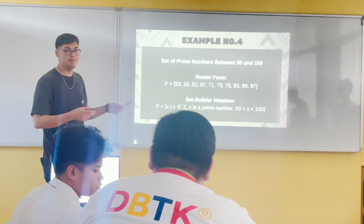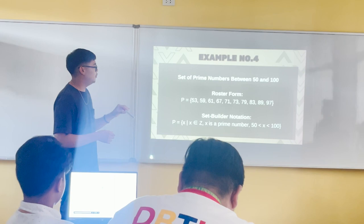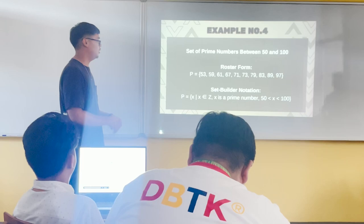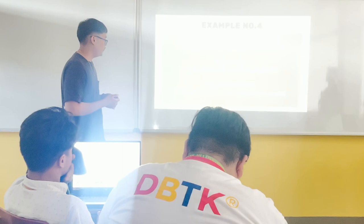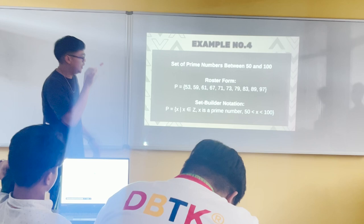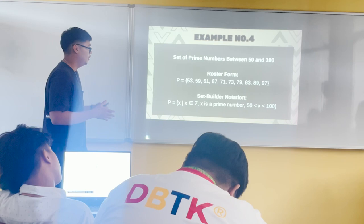Set of prime numbers between 50 and 100. We list down all prime numbers between 50 and 100. The elements are 53, 59, 61, 67, and so on. The set builder notation is: set P = {x | x ∈ Z, x is a prime number, 50 < x < 100}.